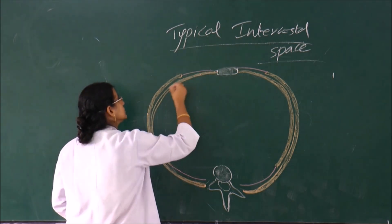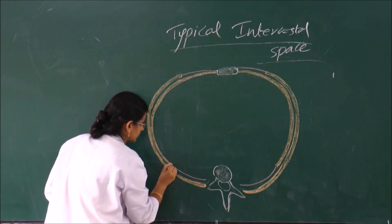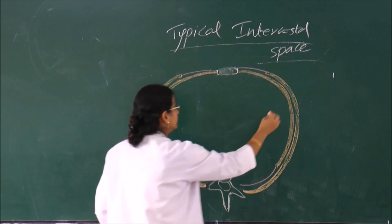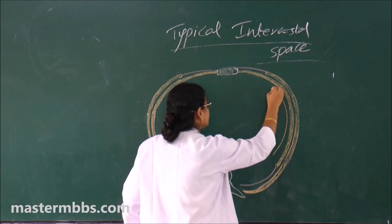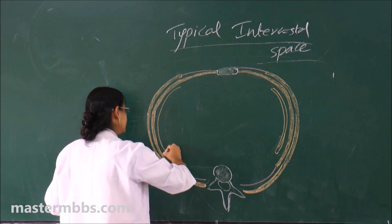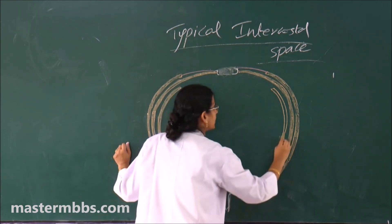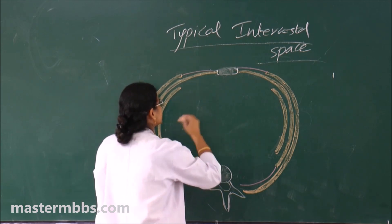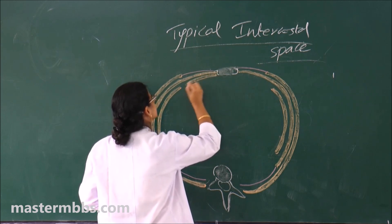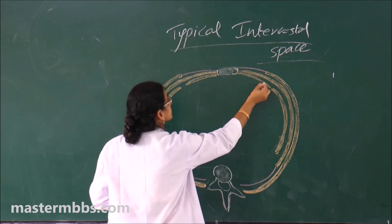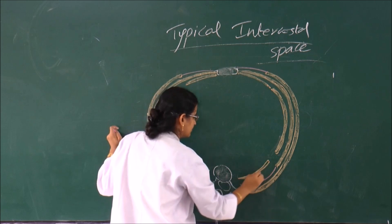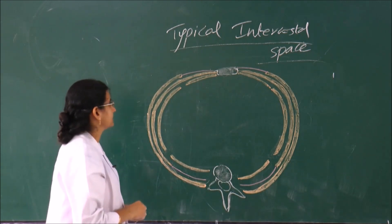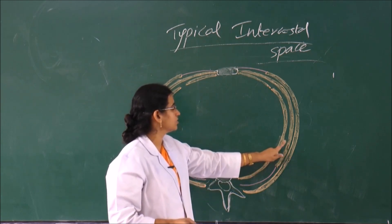Now we have to draw transversalis thoracis. The innermost intercostal muscle occupies only the middle two-fourths — that is one part of transversalis thoracis. The other parts are the sternocostalis muscle, attached to the sternum, and the subcostalis muscle. All three together are called transversalis thoracis. Now, identify the neurovascular plane: it lies between the internal intercostal muscle and transversalis thoracis.